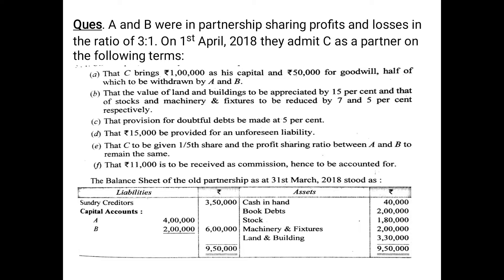Since no hint about the new ratio or any sacrifice is given, we will assume the old ratio to be the sacrificing ratio. So the journal entry for the capital and goodwill brought in by C — the entry would be bank account or cash account debited.